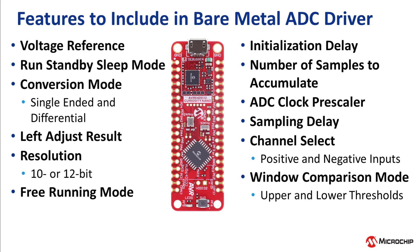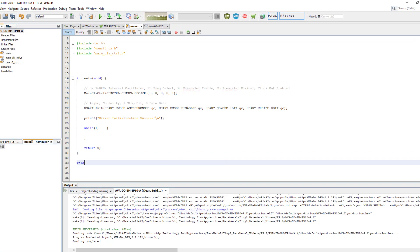We want to make our ADC initialization function as fully featured as possible, so we will include things like the voltage reference, run standby, conversion mode — that is single-ended or differential — whether we want the result left adjusted or not, the required resolution (that is 10 or 12-bit), free running mode, a user-defined initialization delay, number of samples accumulated, ADC clock prescaler from the peripheral clock, sampling delay, channel select for both the positive and negative inputs, window comparison mode, and the upper and lower thresholds for the window comparison. I will call the init function ADC_init, which has a void return and will have all of those parameters.